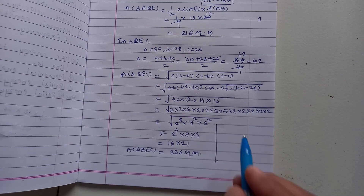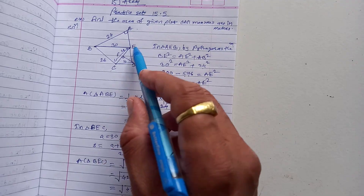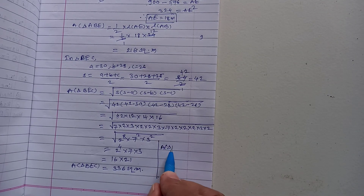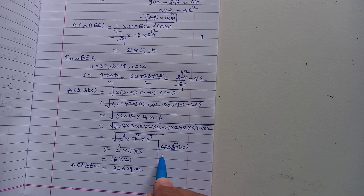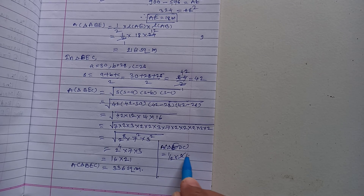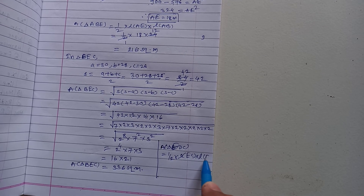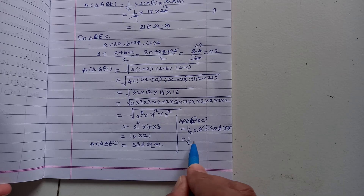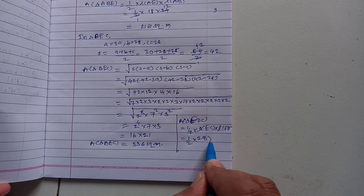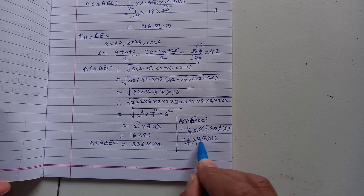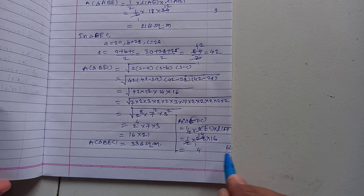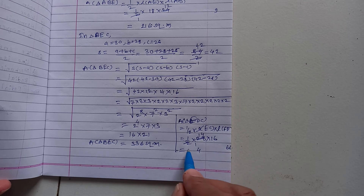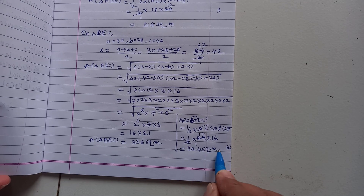The last triangle is EDC. It is very simple: area equals one half times base EC times height FD. Put the values: one half times 28 times 16. Dividing 28 by 2 gives 14, then 14 times 16: 14 times 6 is 84, 14 times 10 is 140, so 224. Area of triangle EDC equals 224 square meters.